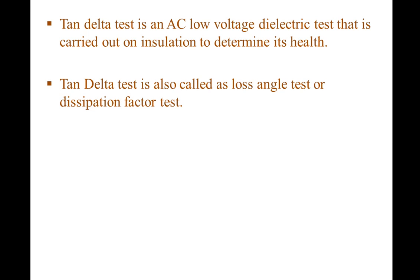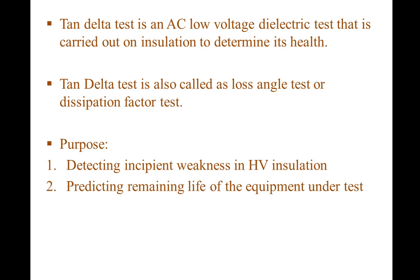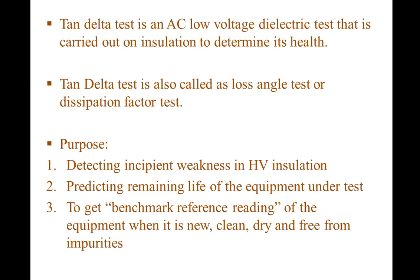The purposes of doing tan delta test are: detecting incipient weakness in HV insulation — incipient weakness means slowly growing weakness in the insulation — predicting the remaining life of the equipment under test, and to get a benchmark reference reading of the equipment when it is new, clean, dry, and free from impurities.